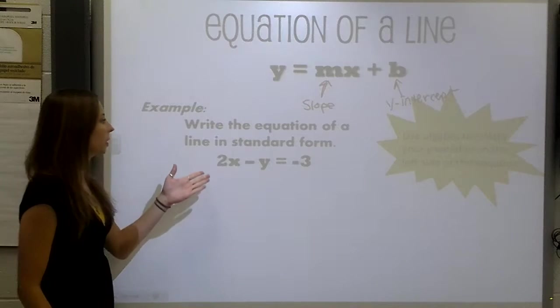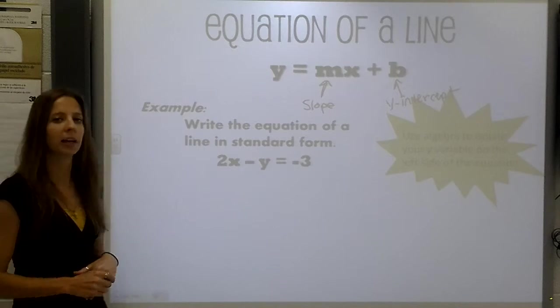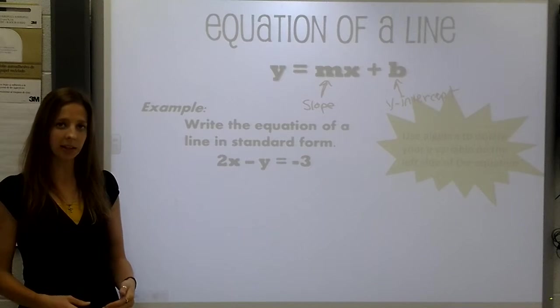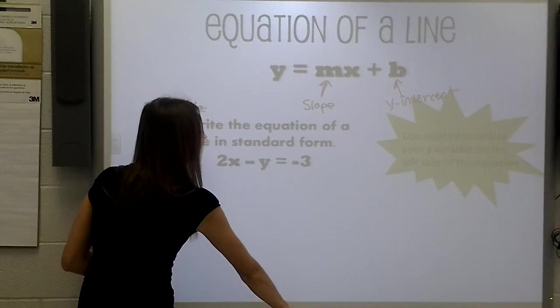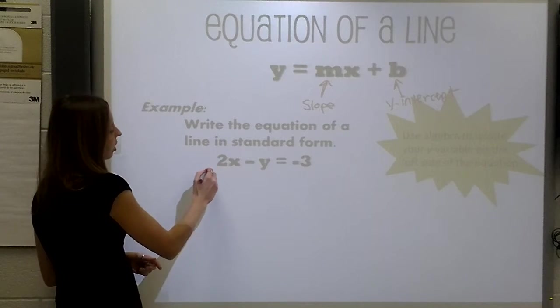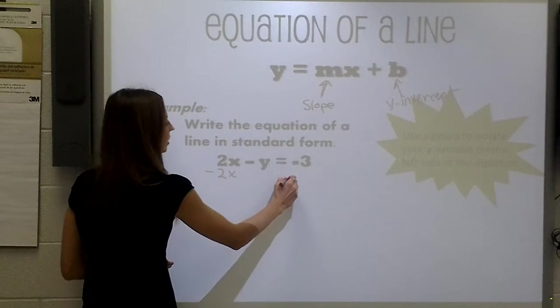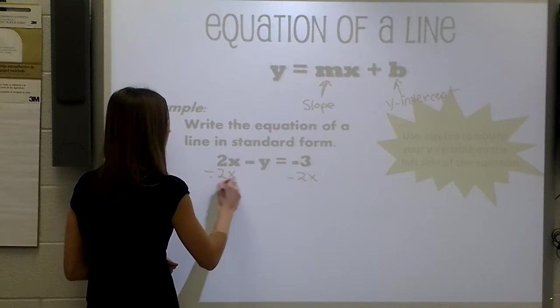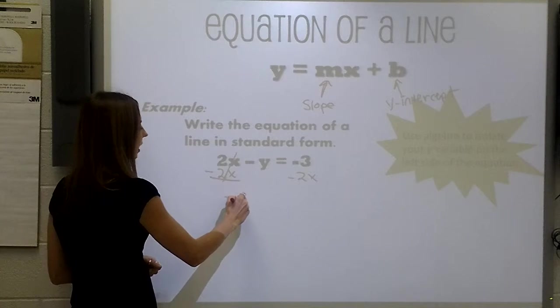So if we are given a formula here, 2x minus y equals negative 3, we can rewrite this to turn it into standard form using algebra to get the y variable by itself. To do that, we would subtract 2x on both sides of the equation. These would cancel out and we would drop our negative y down.